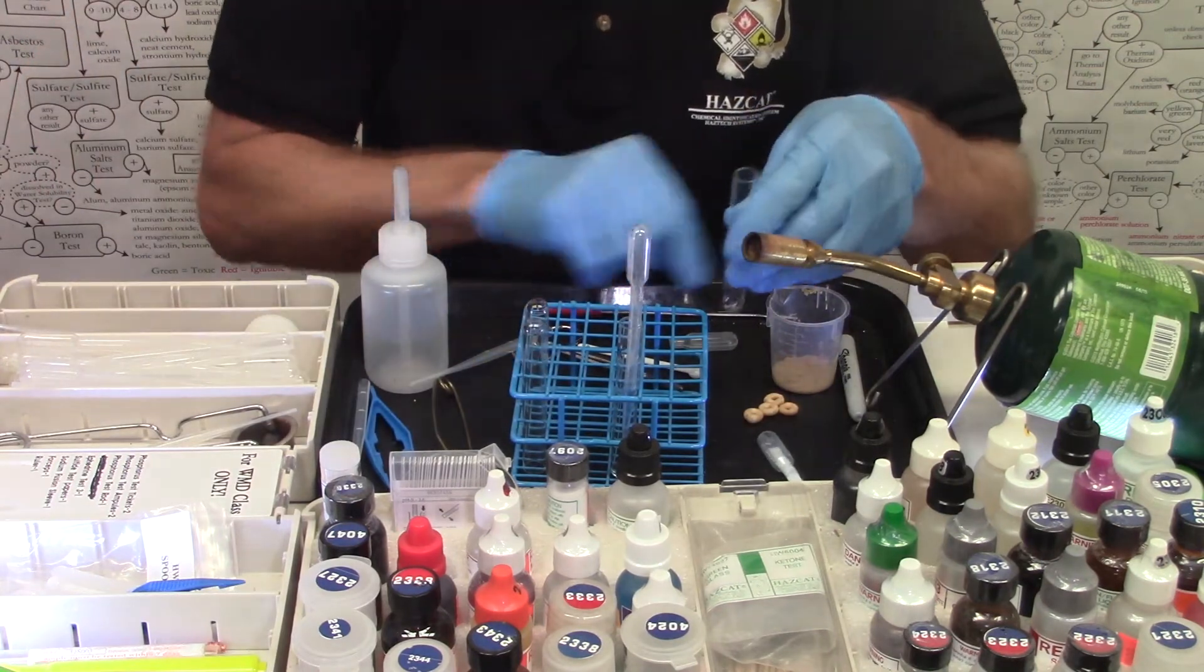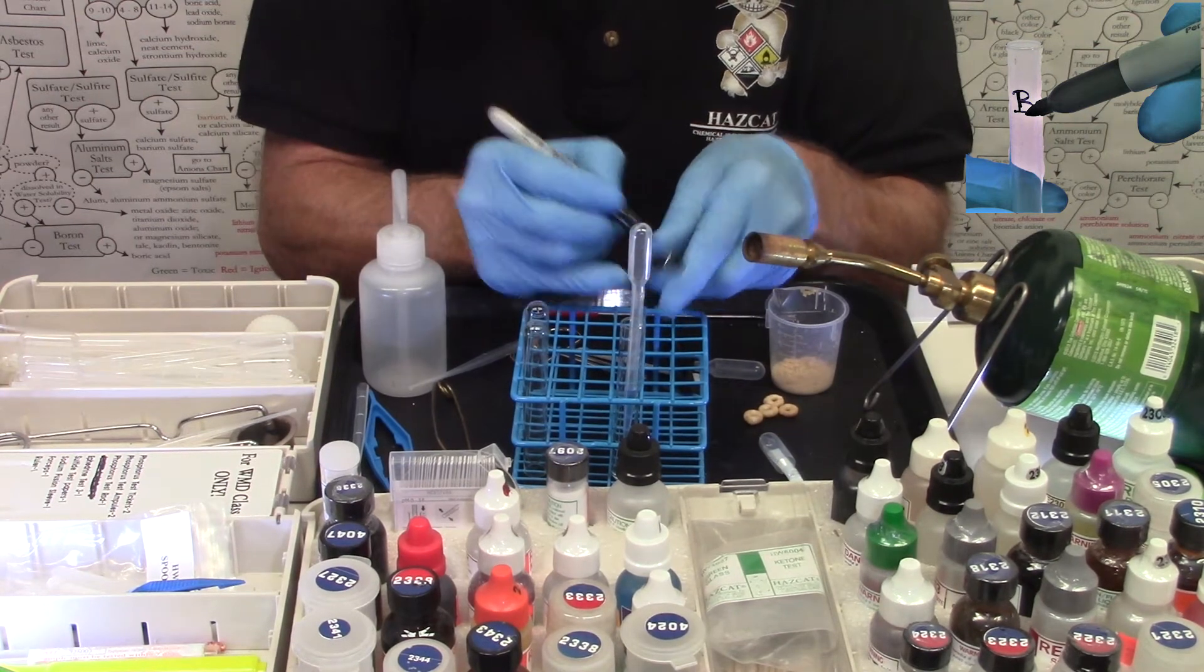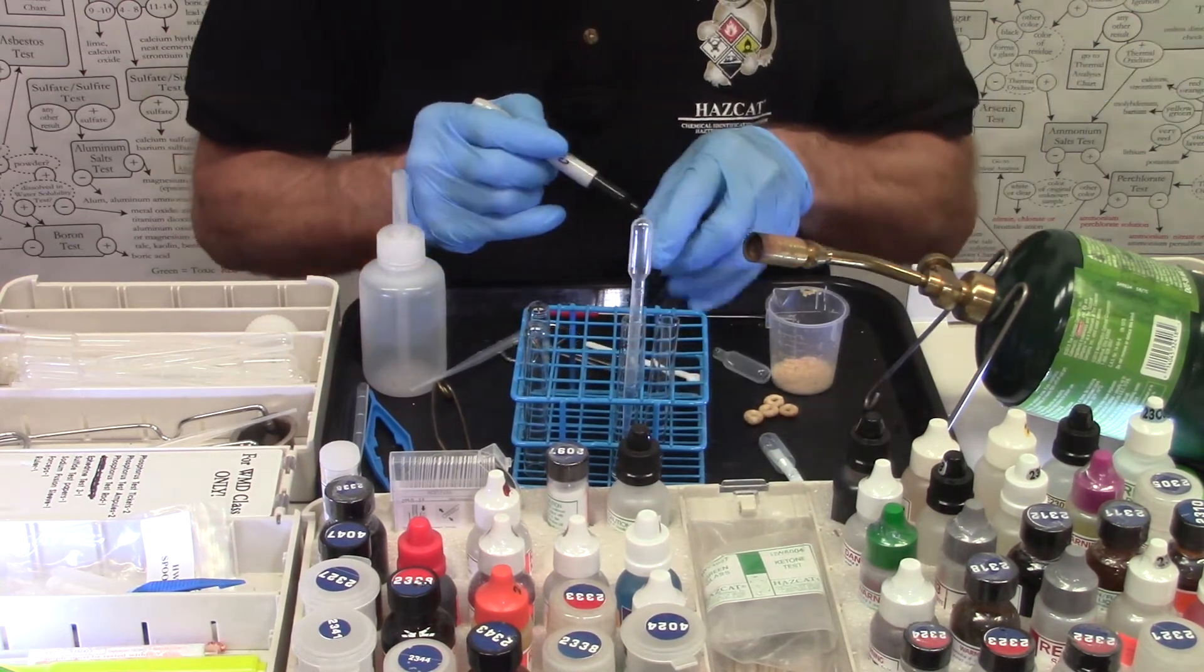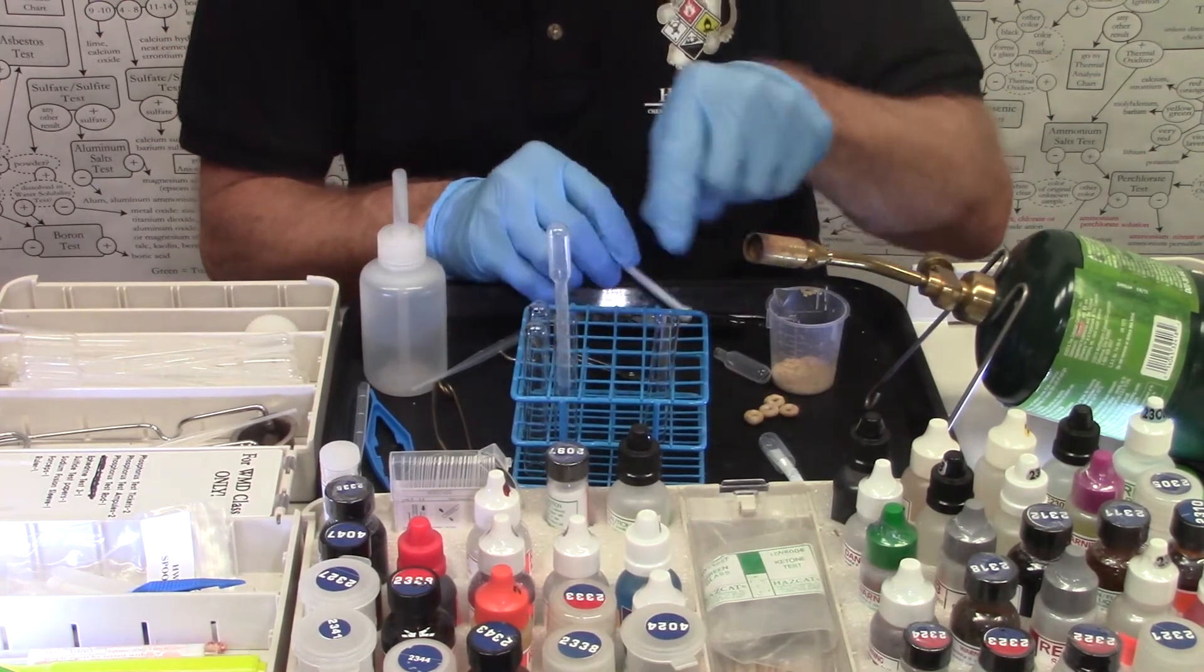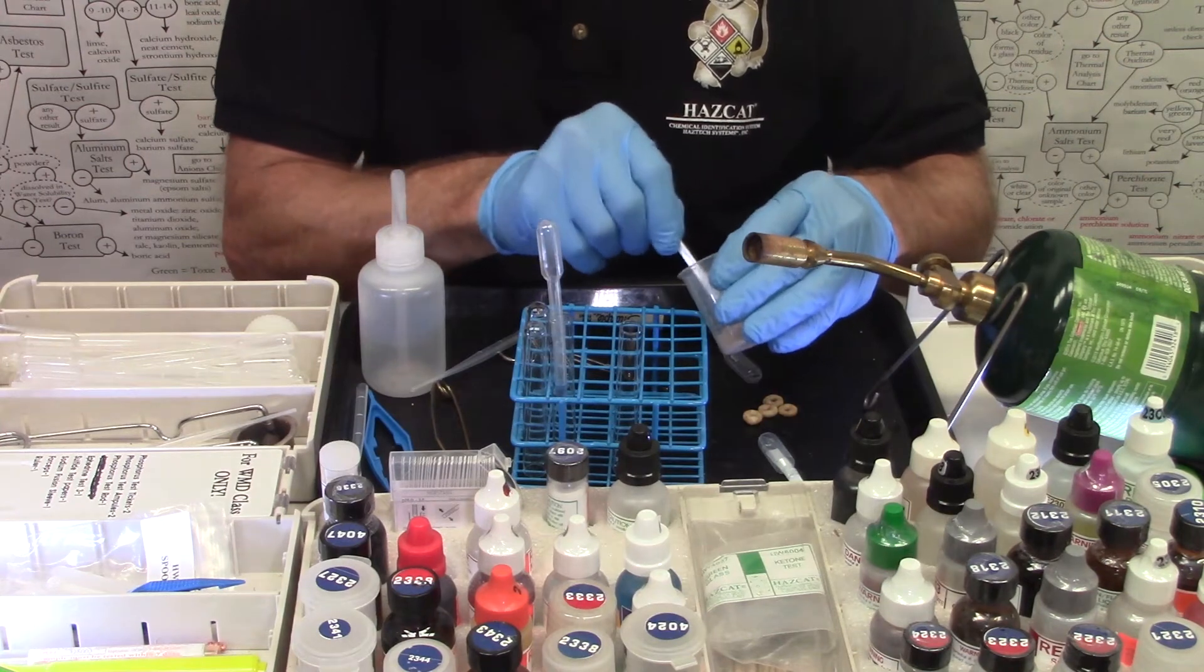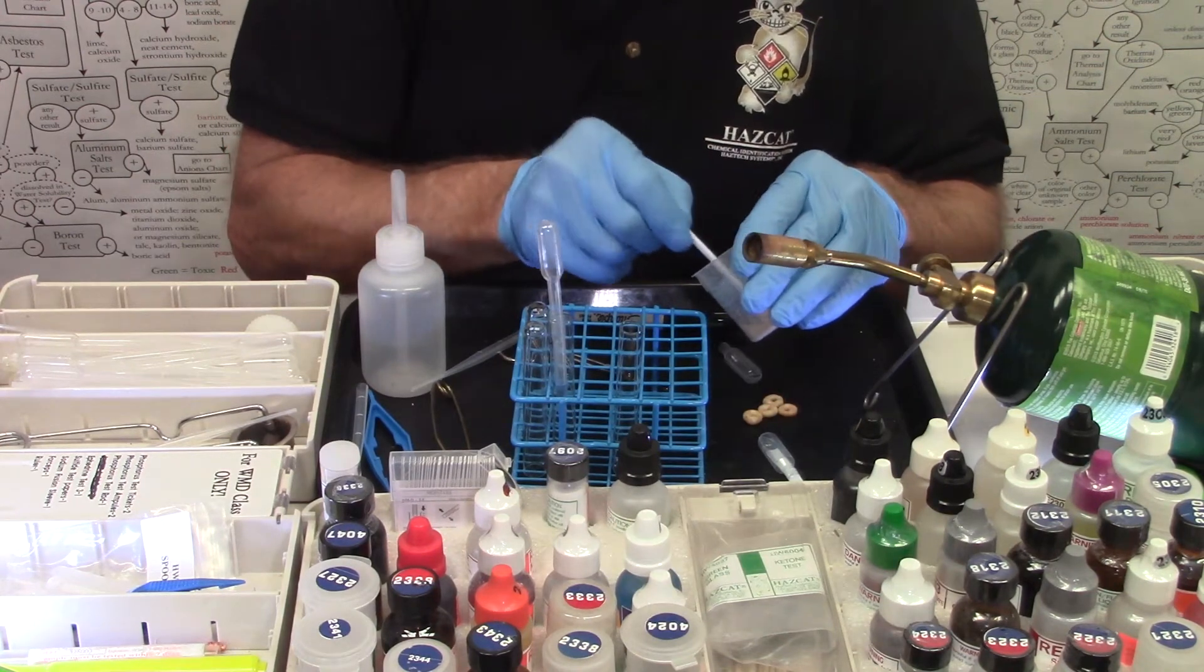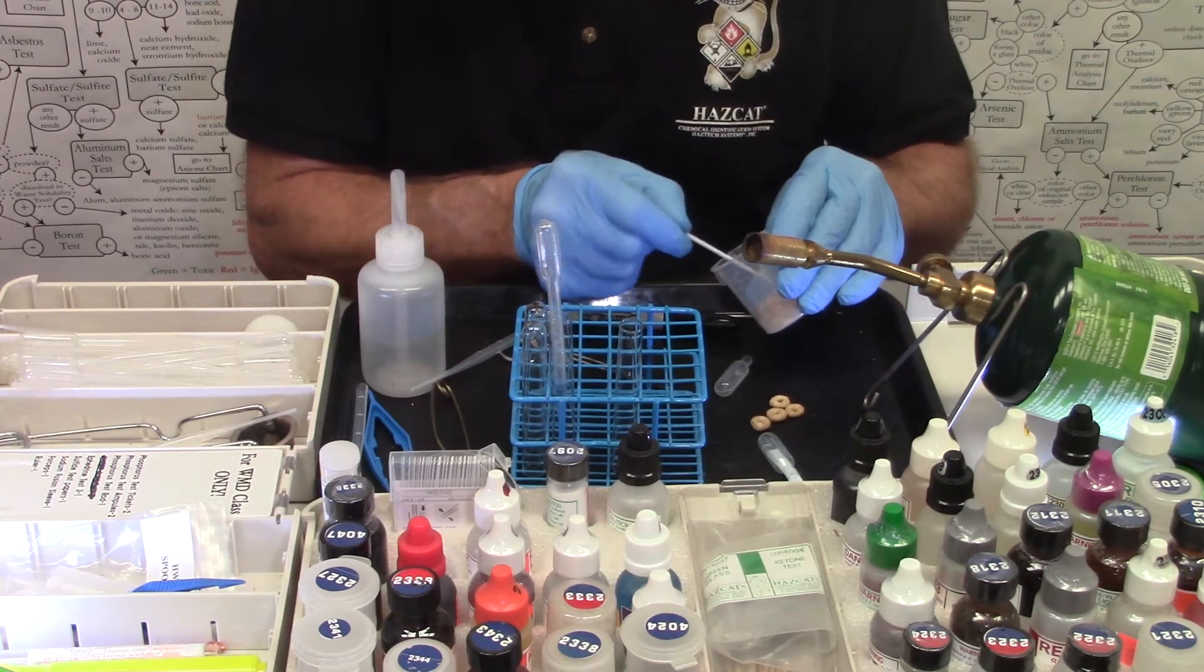Take a new test tube. I'm going to mark it with a B now. And into that test tube, I'm going to put my sample. It's a half inch of a liquid or a half spoonful of a solid. Here my sample today are Cheerios.